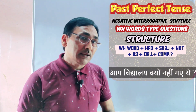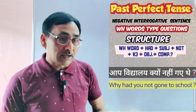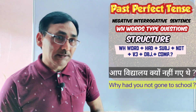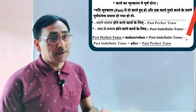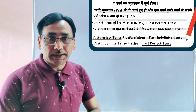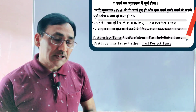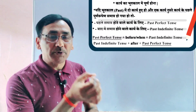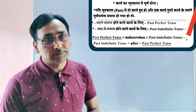इस प्रकार से single clause के रूप में चार प्रकार के वाक्य देखने को मिलते हैं। अब हम double clause के रूप में Past Perfect Tense के उपयोग को देखेंगे। जब double clause होते हैं तो conjunction के रूप में before, after, या कभी-कभी when का प्रयोग देखने को मिलता है।